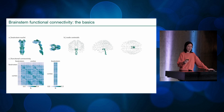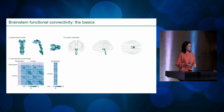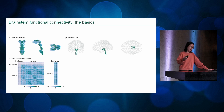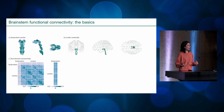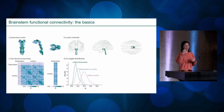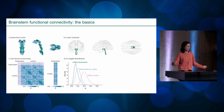Looking at brainstem functional connectivity, you can see right away the signal is lower — the signal-to-noise ratio is worse that far down in the brain. But zooming in on the cortex-to-brainstem functional connectivity, you can see stripes across the columns and rows, indicating dominant patterns. Interestingly, the functional connectivity from brainstem to cortex is actually stronger than within the brainstem itself, which aligns with the intuition that the brainstem is a structure projecting out to the cortex, spinal cord, and cerebellum, rather than being highly internally connected.